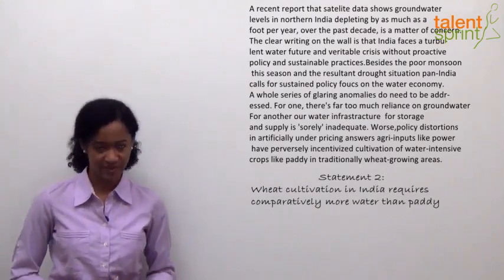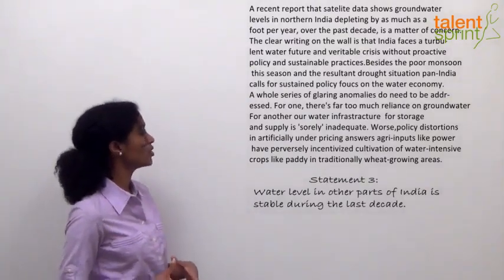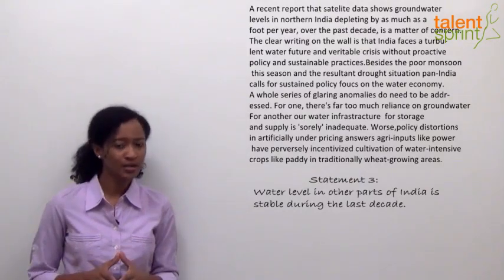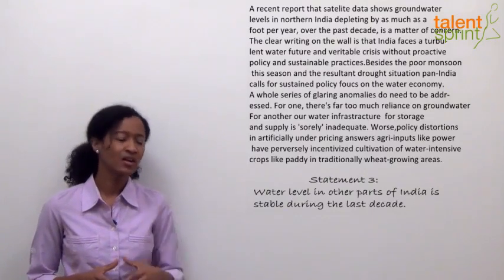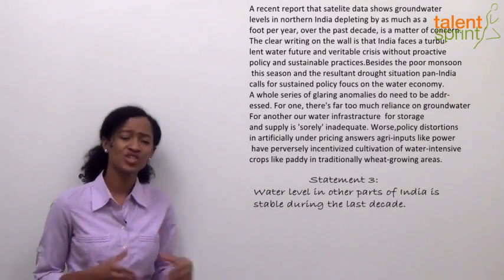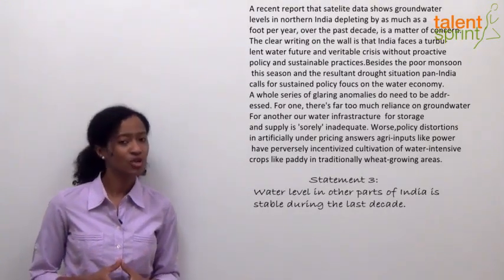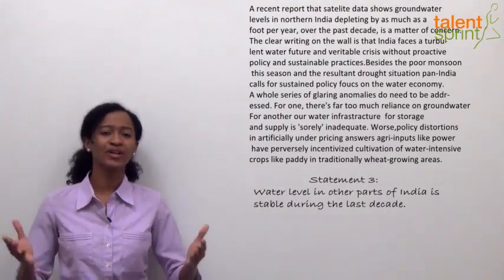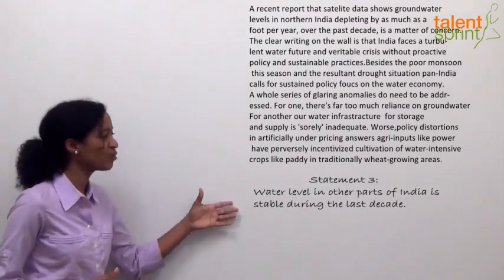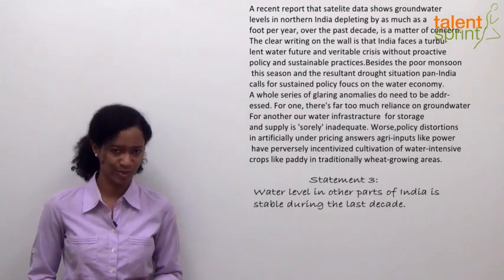Statement 3 says: 'Water level in other parts of India is stable during the last decade.' We know that in the northern part groundwater is depleting a foot every year, but we do not have enough information in the passage about what is happening in other parts of India. So this falls under option 3 — inadequate data, not enough information to support this statement.